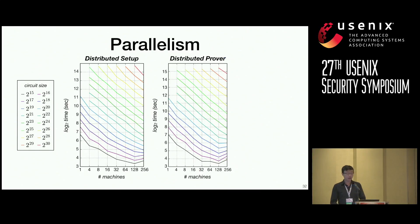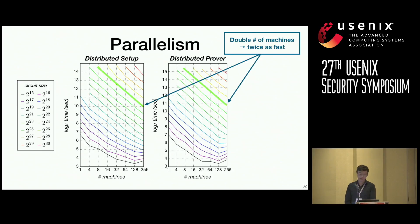And here, again, we plot the same data, but now we show the machines on the x-axis and plot the circuit size. On the left, again, you see the distributed setup. And on the right, you see the distributed prover. And if we follow this particular line here at 2 to the 26, the pattern that we see here is that as we double the number of machines, we're able to run our proof generation at approximately twice as fast.